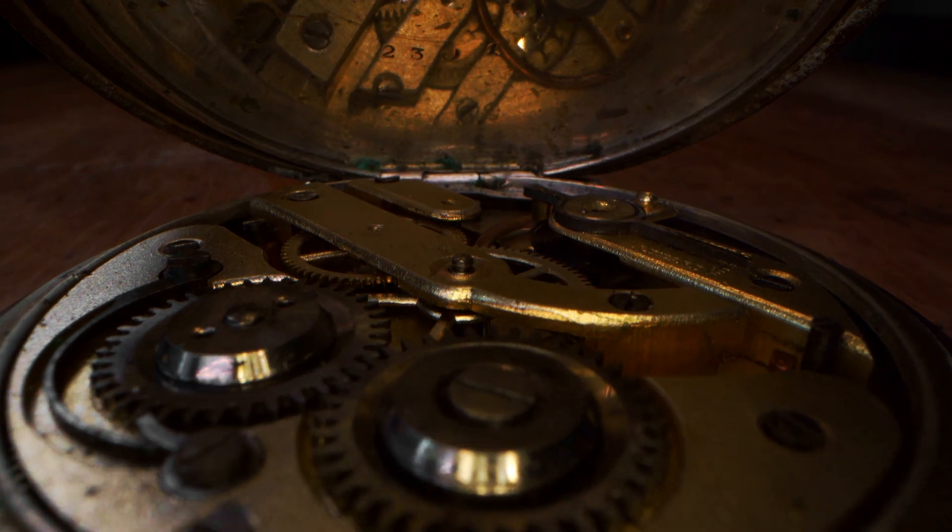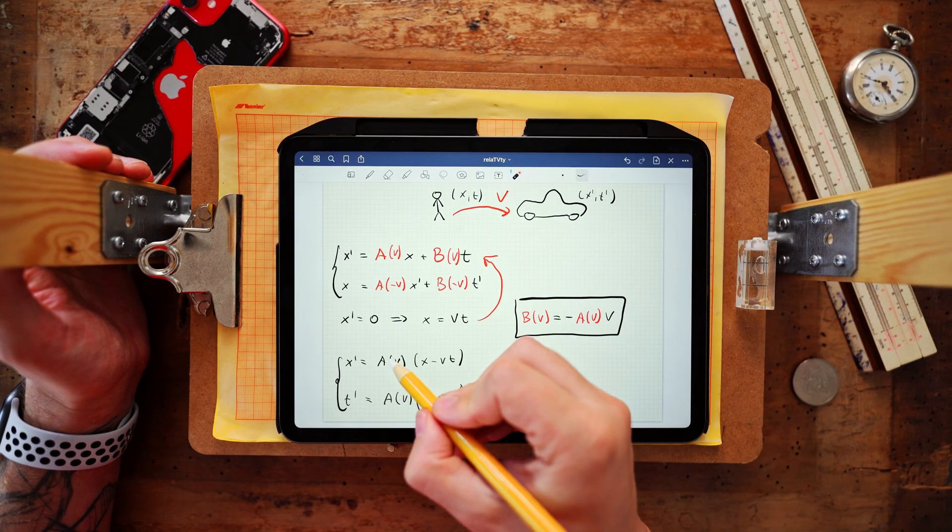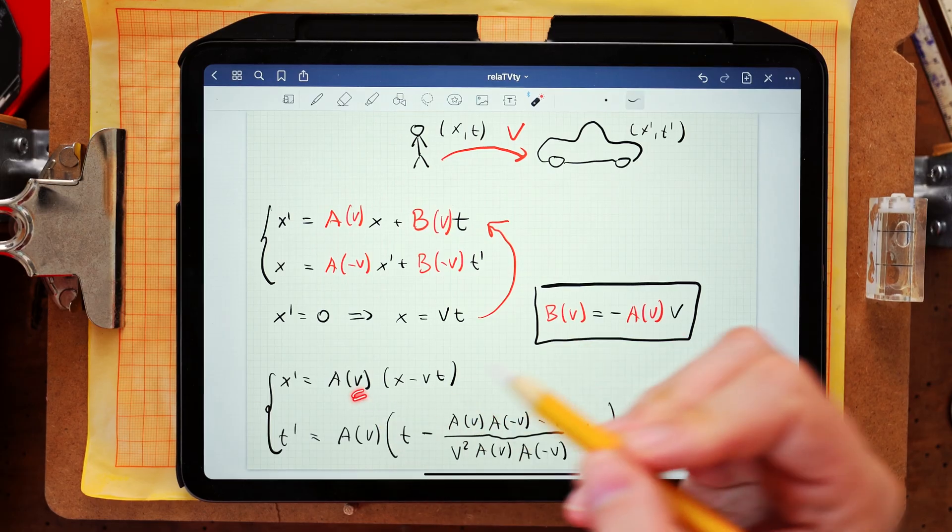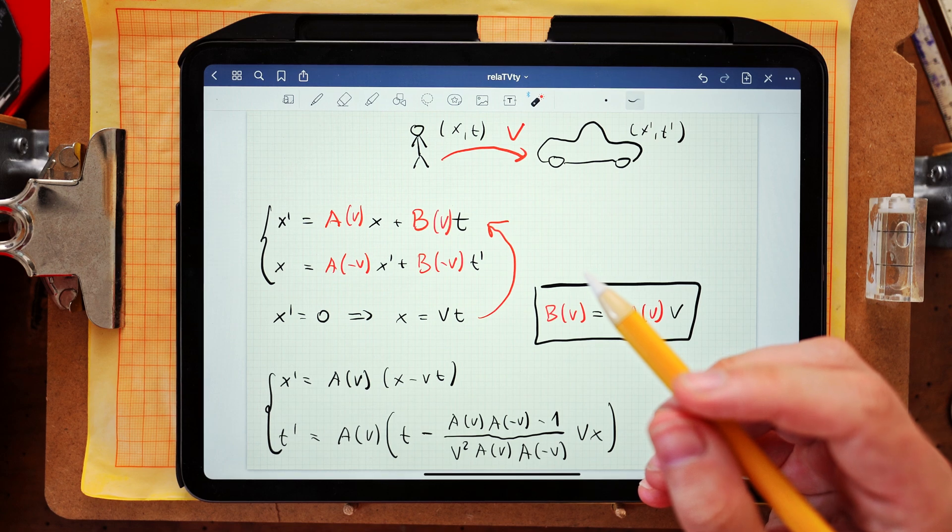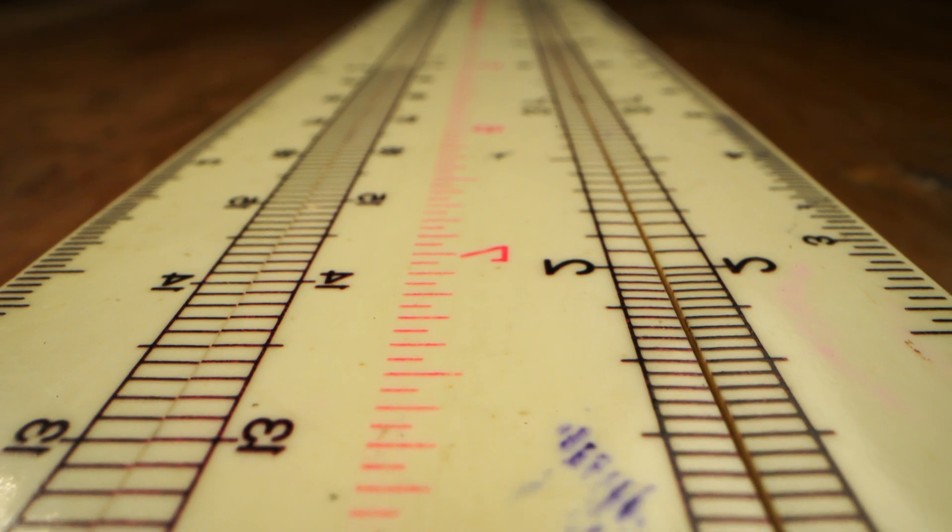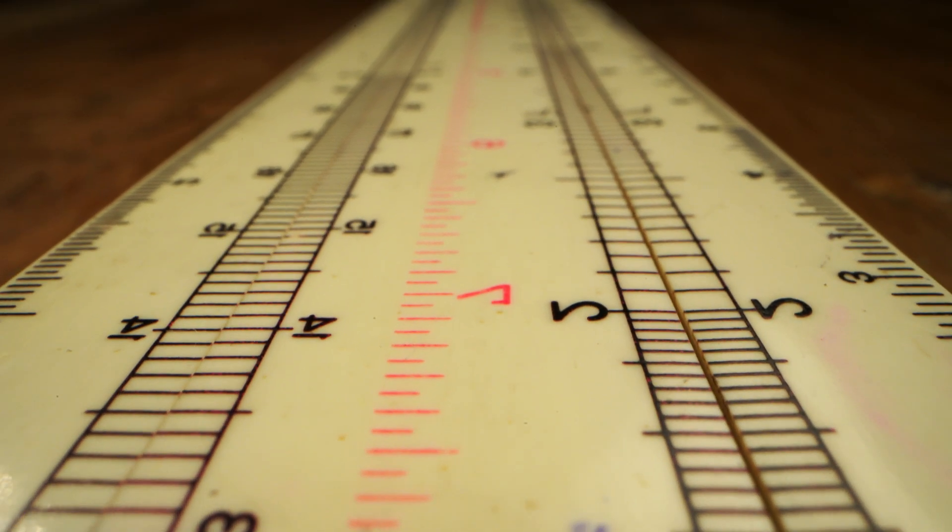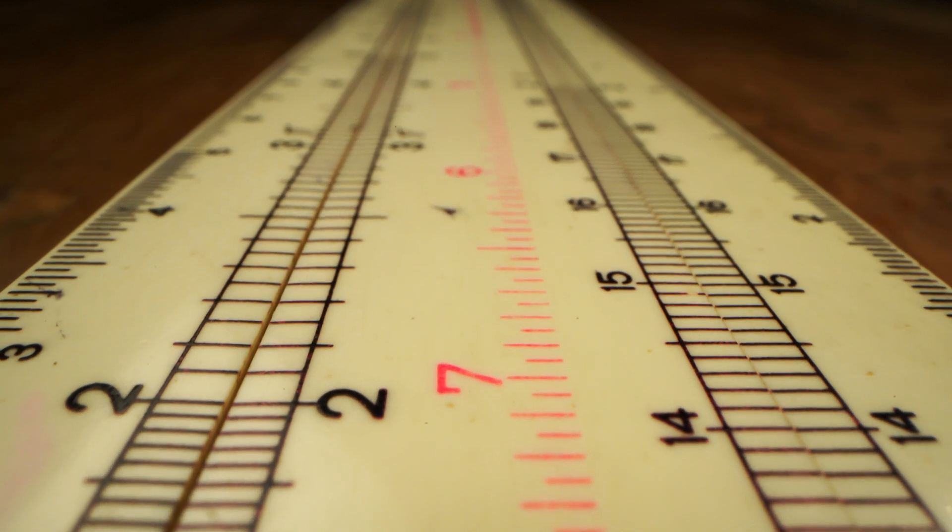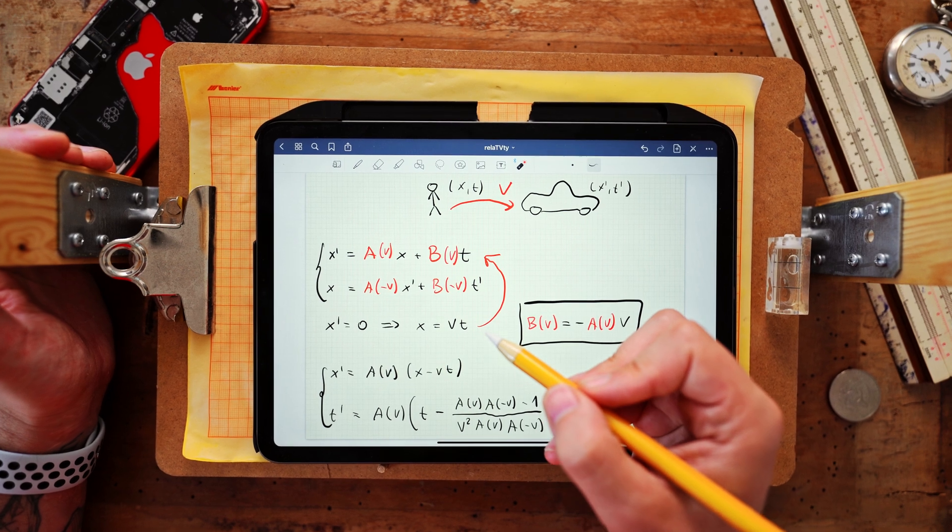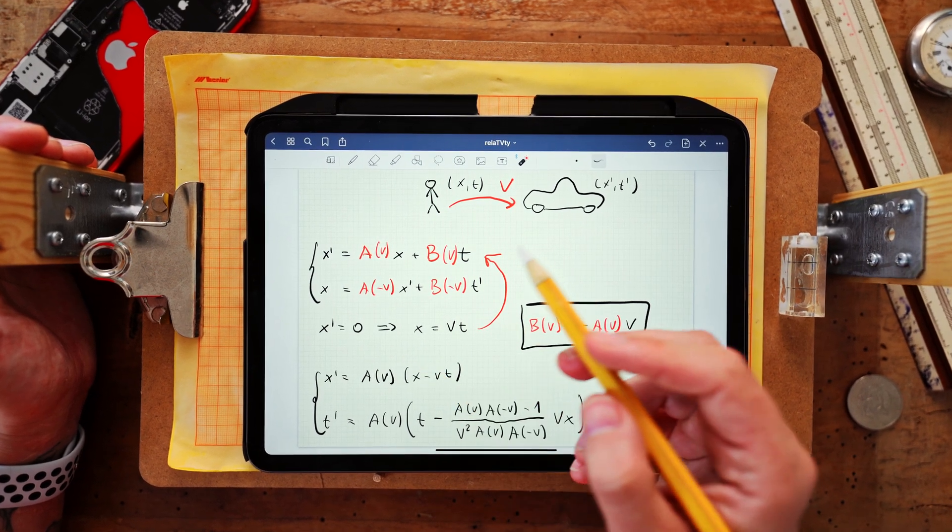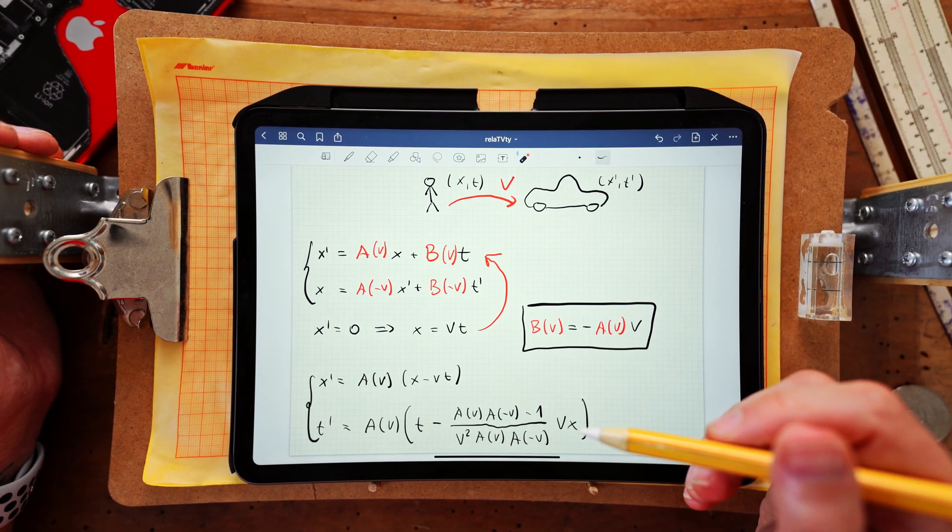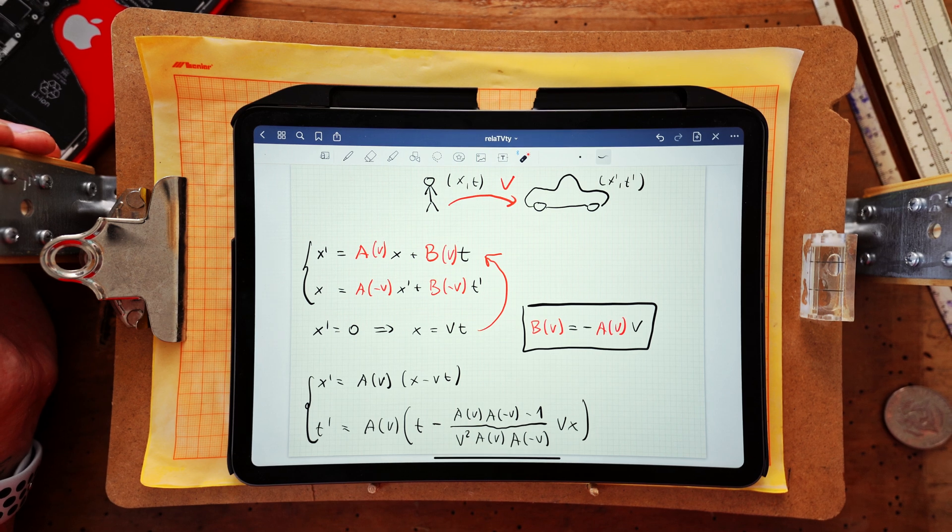And at this stage all that we can say about the unknown coefficient a is that it has to be either a symmetric or antisymmetric function of its argument v. And the reason for this is very simple. If one of the observers chooses to flip his spatial axis x into minus x then such operation can only introduce some sign flips in the transformation formulas. But notice that such operation also flips all the signs of velocities. And since the unknown coefficient a depends on the velocity then that dependence can only be symmetric or antisymmetric so that the operation only introduces some sign flips in the transformation formulas.